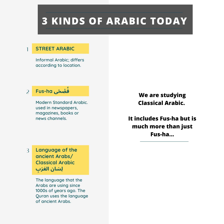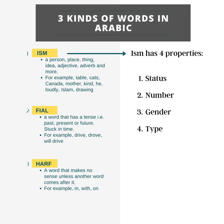There are three kinds of Arabic today: Street Arabic, Fusha, and Classical Arabic, that is Lisanul Arabiya. We are learning Classical Arabic. There are three kinds of words in Arabic: Ism, Fi'al, and Harf.